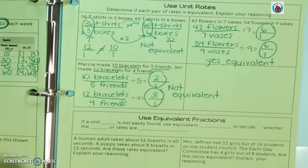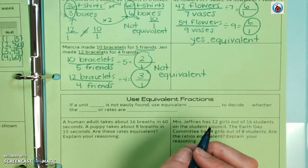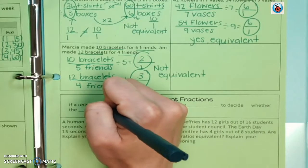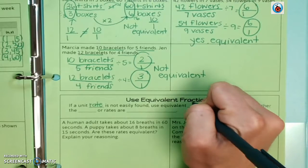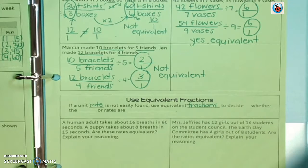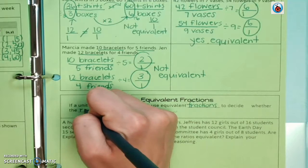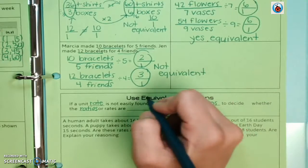Let's look at the bottom. We're going to be using equivalent fractions in this part. So if a unit rate is not easily found, use equivalent fractions to decide whether the ratios or rates are equivalent.